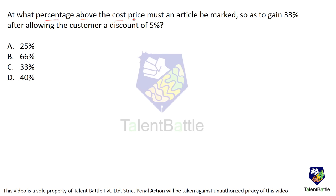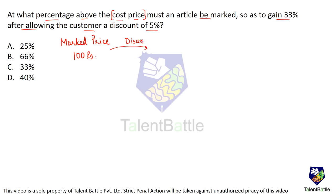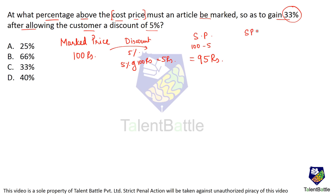At what percentage above cost price must an article be marked to gain 33% after allowing a 5% discount? Let the marked price be ₹100. A discount of 5% means a discount of ₹5, so selling price = ₹95. For a 33% gain, SP = 1.33 × cost price. So 95 = 1.33 × CP, giving CP = 95/1.33.